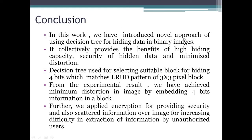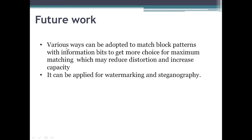In conclusion, this work introduces a novel approach of decision tree usage for hiding data in binary images. It collectively provides high hiding capacity with security of hidden data and minimized distortion. The decision tree is used for selecting suitable blocks for hiding 4 bits, which matches the LRUD pattern of a 3x3 pixel block. From experimental results, minimum distortion in the image is achieved by embedding 4-bit information per block. Encryption is applied for security, and information is scattered over the image to increase difficulty in extraction by unauthorized users. For future work, various ways can be adopted to match block patterns with information bits to get more choices for maximum matching, which may reduce distortion and increase capacity. The technique can also be applied for watermarking and steganography.